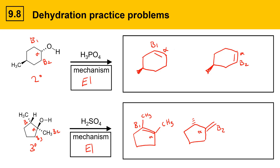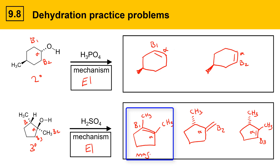Another possibility is that the beta 2 position gets deprotonated, placing the double bond between alpha and beta 2. The final possibility is that the beta 3 proton is deprotonated, giving a double bond between alpha and beta 3 — a trisubstituted alkene. Of the three possible products, we have a disubstituted, a trisubstituted, and a tetrasubstituted alkene. Since the tetrasubstituted is the most stable, it will be the major product.